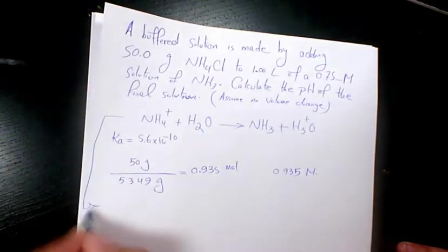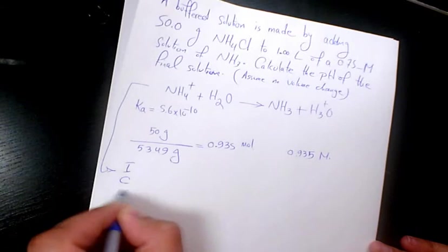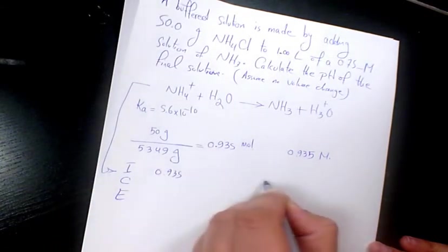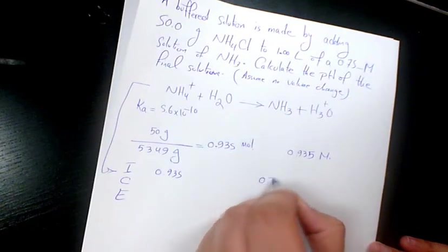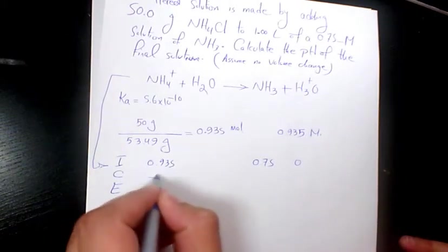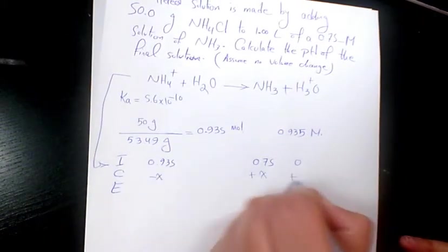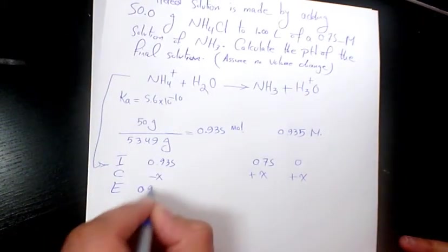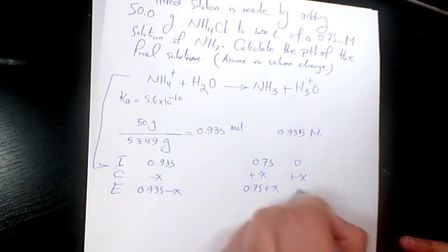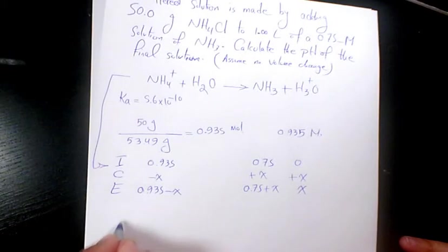We set up an ICE table with initial, change, and equilibrium. Ammonium is 0.935, ammonia is 0.75, and hydronium is approximately zero because it's much smaller than the other numbers. Change is negative x, plus x, plus x, giving 0.935 minus x, 0.75 plus x, and x.